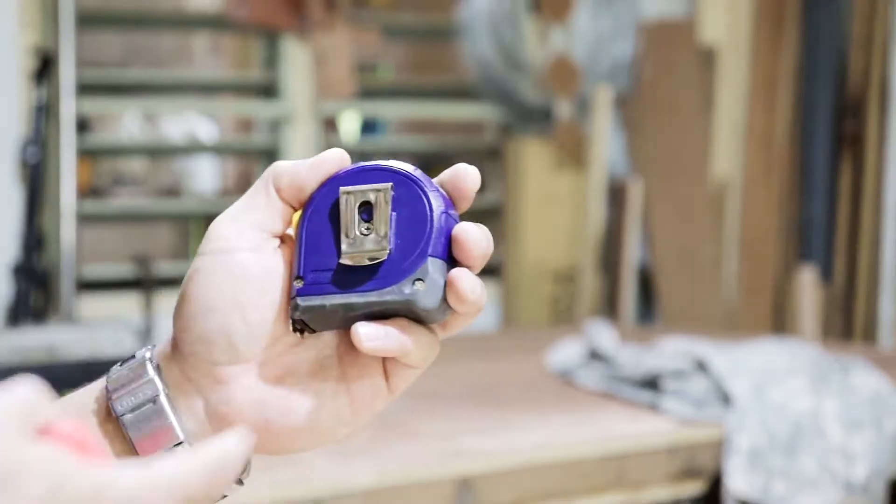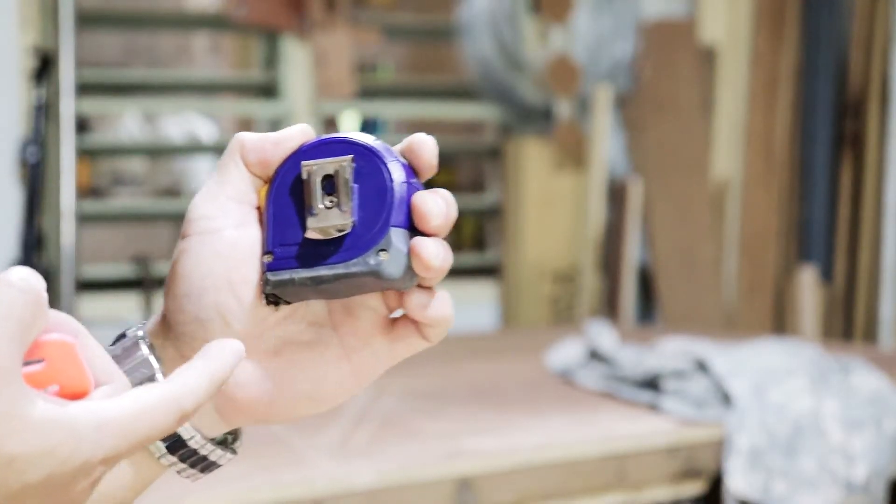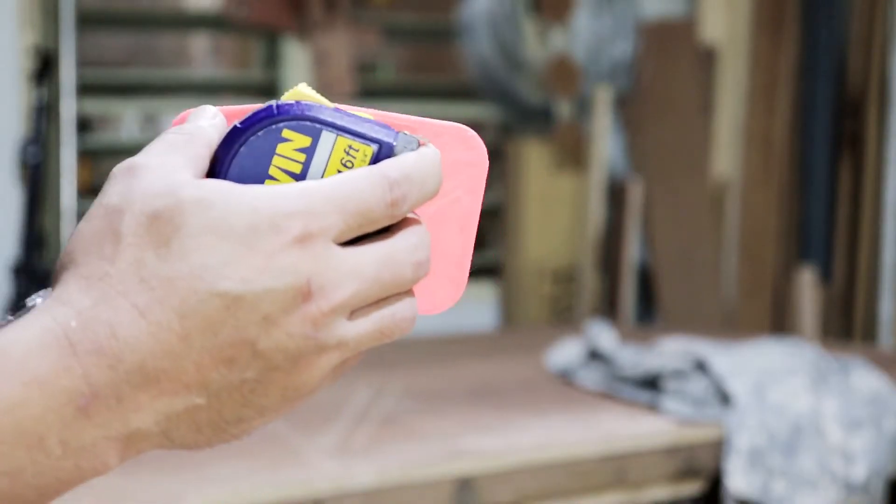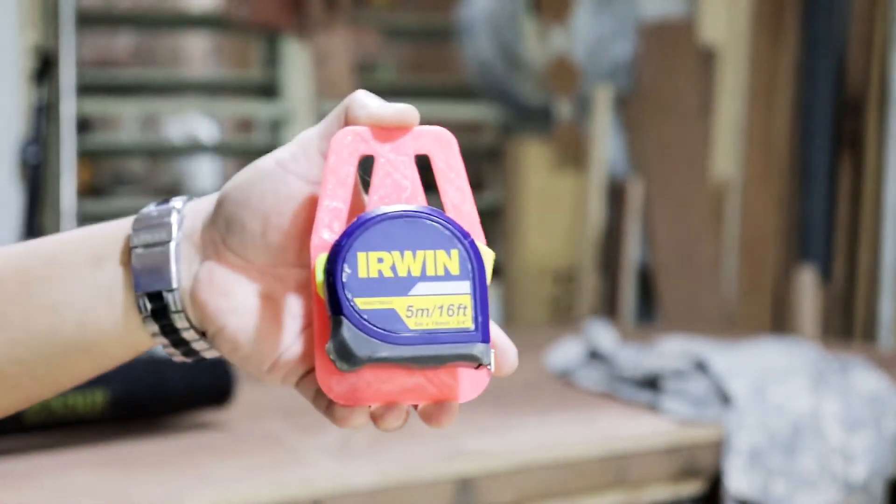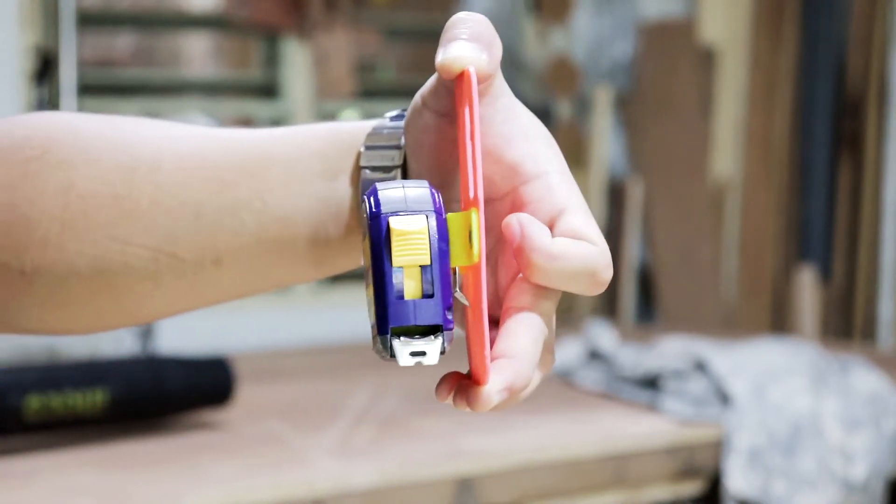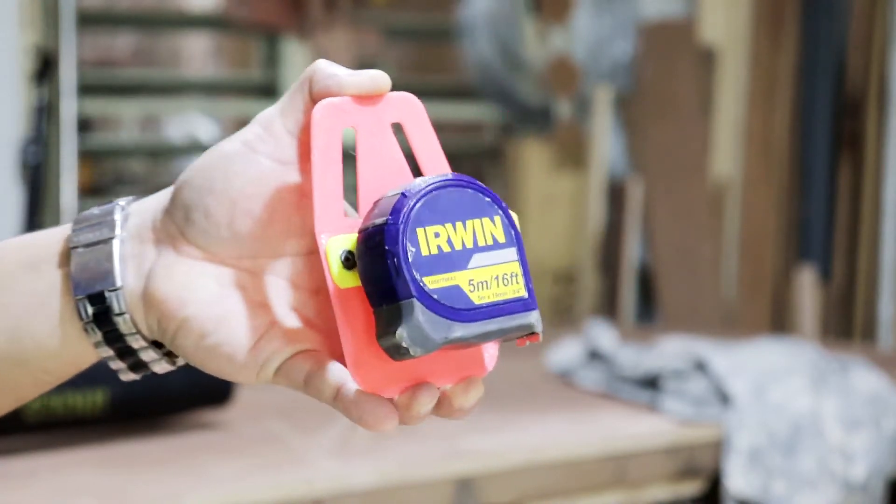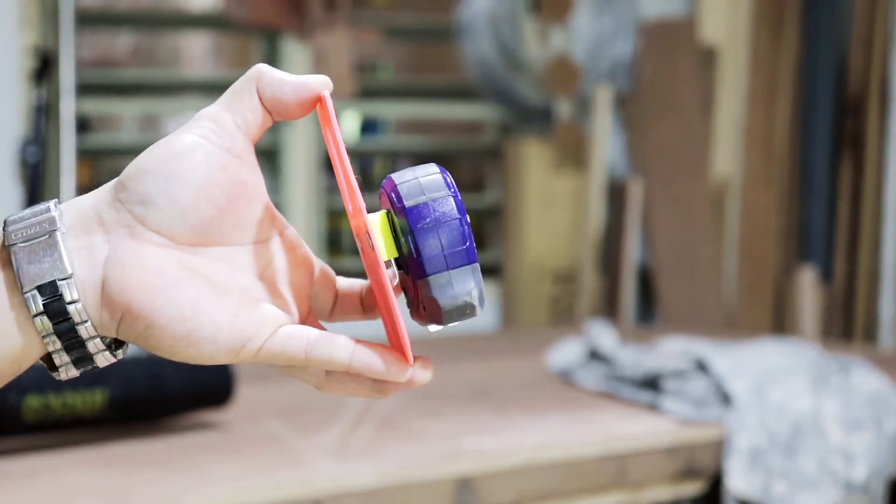This is the tape measure that I always use. All tape measures have this clip at the back. Attach your tape measure like shown in the video. I have tried running with this. It does not fall off easily. It is very secure once you hear that click.